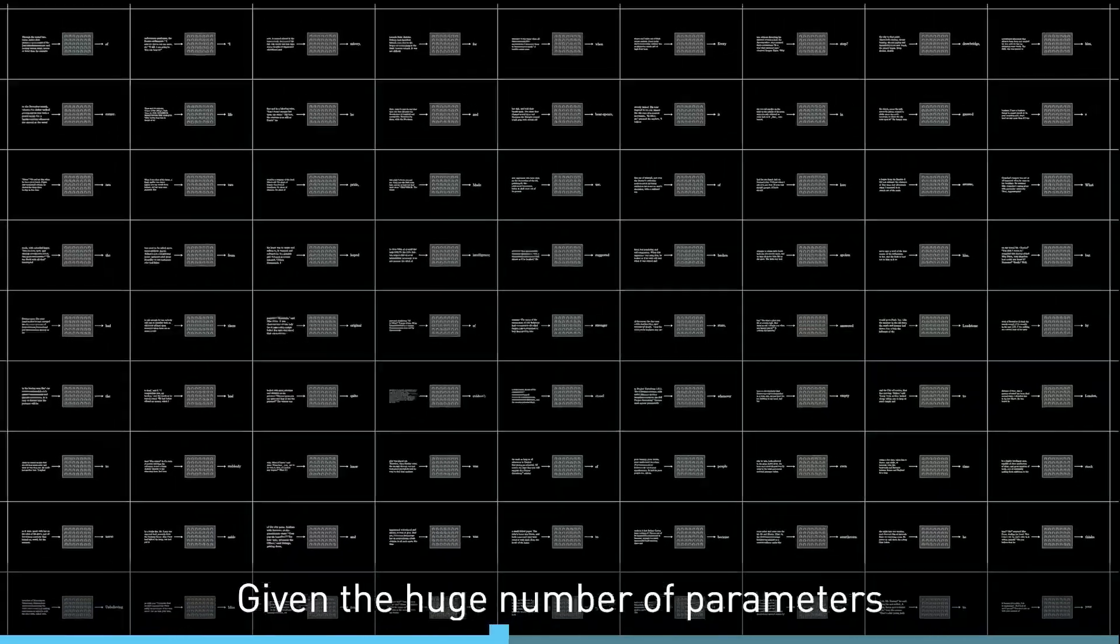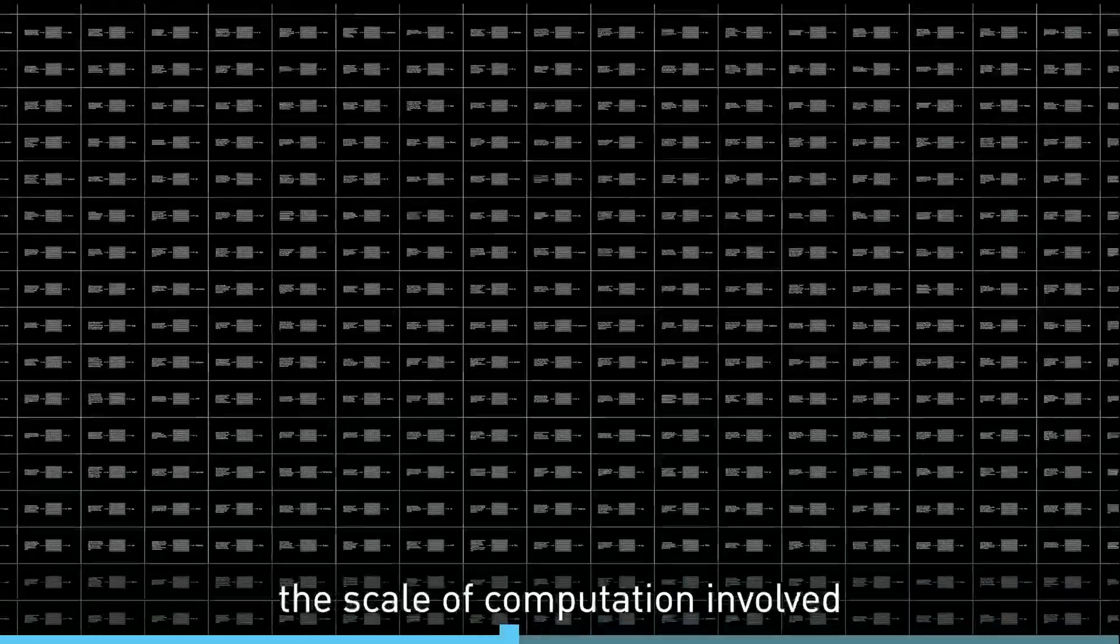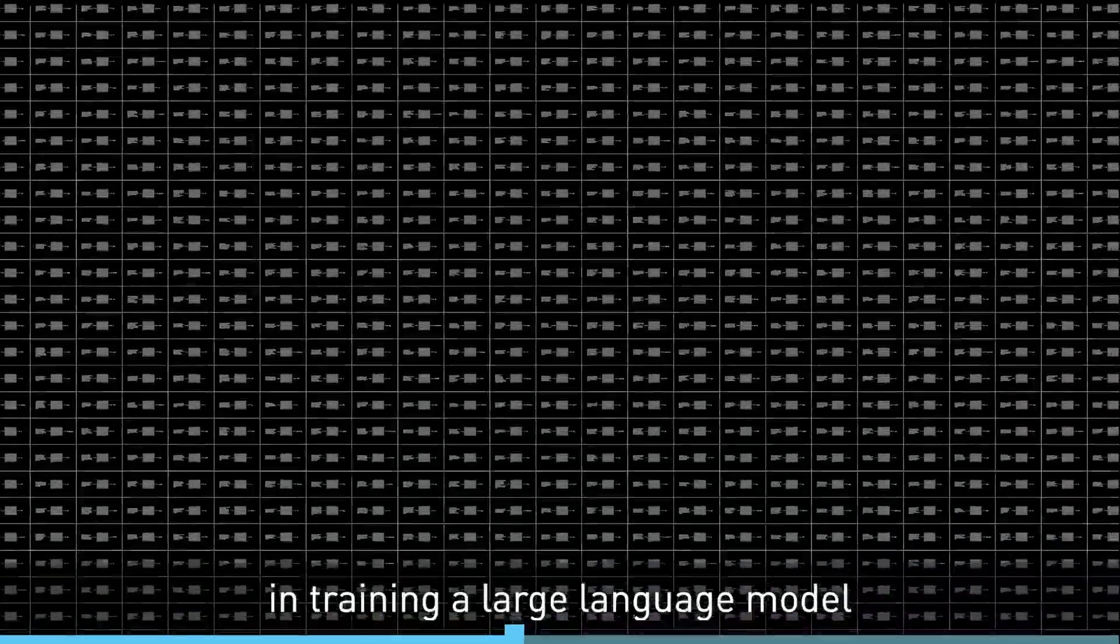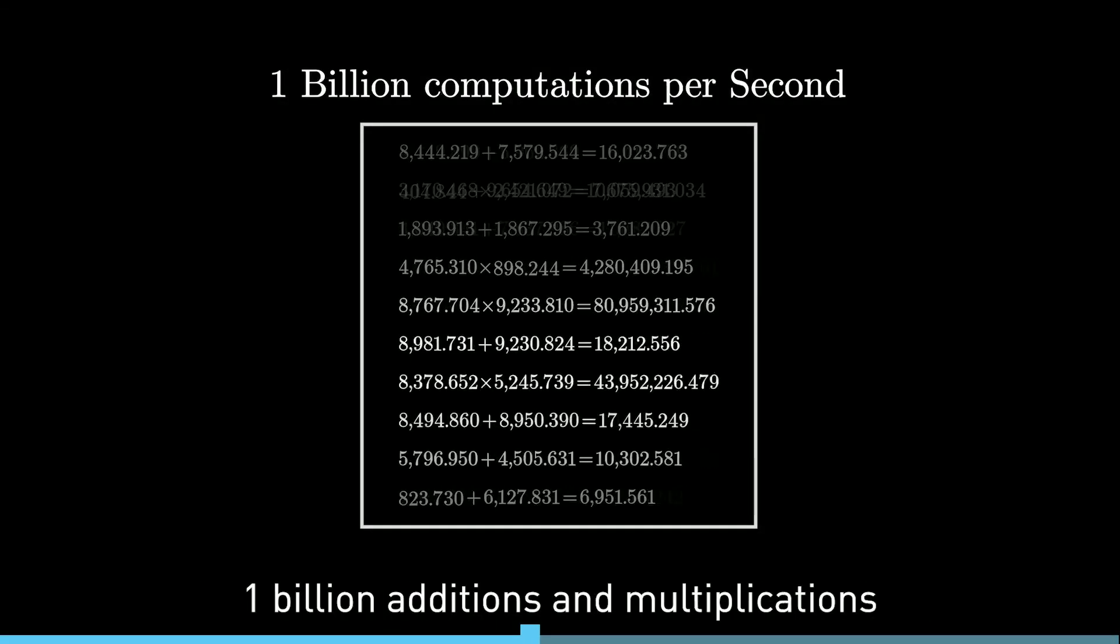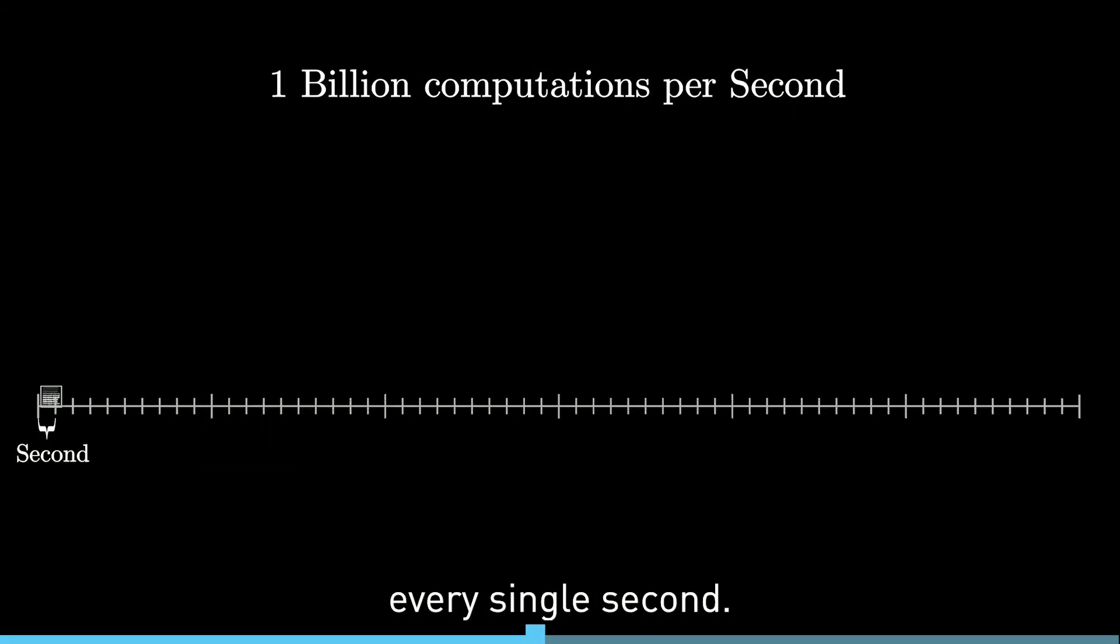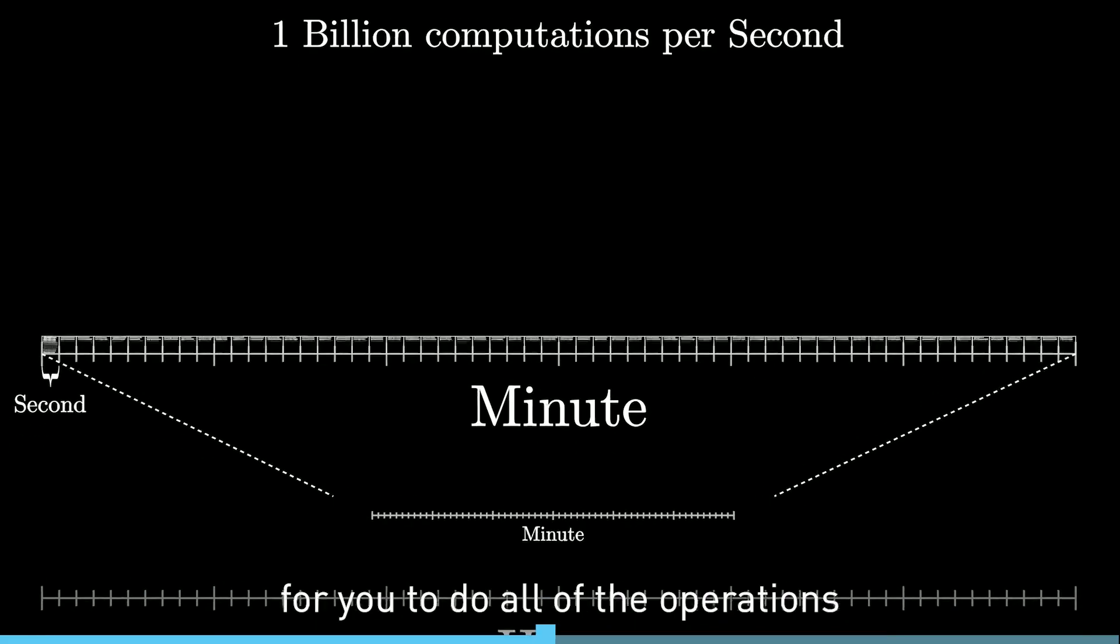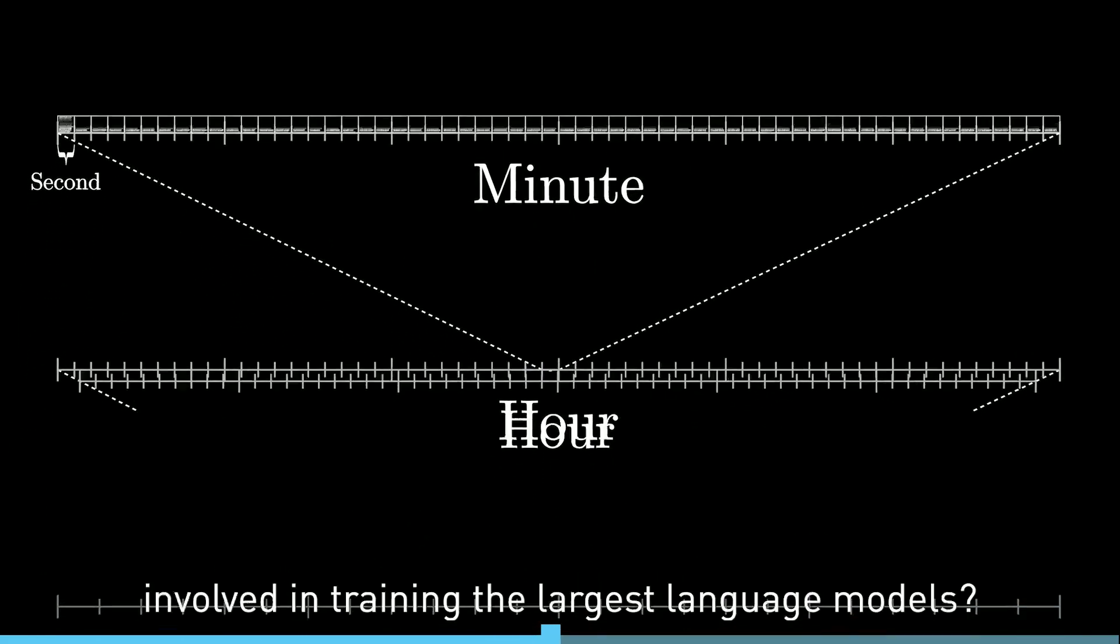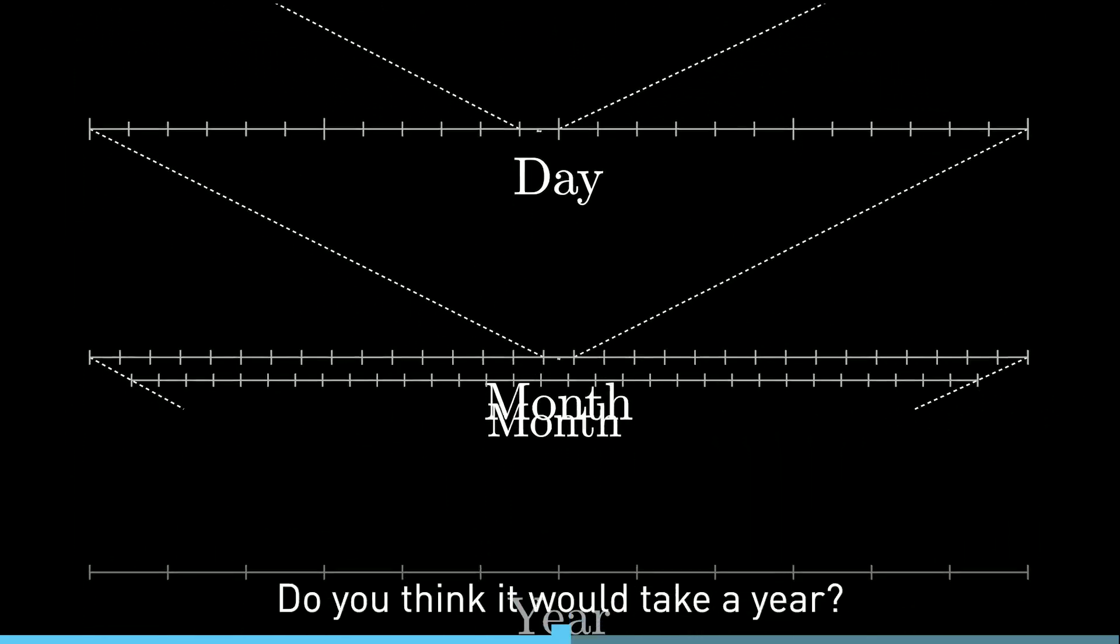Given the huge number of parameters and the enormous amount of training data, the scale of computation involved in training a large language model is mind-boggling. To illustrate, imagine that you could perform one billion additions and multiplications every single second. How long do you think that it would take for you to do all of the operations involved in training the largest language models?